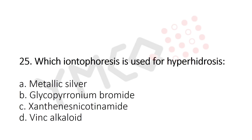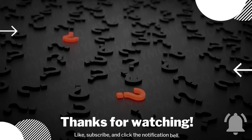Question 25: Which iontophoresis is used for hyperhidrosis? Option A: metallic silver; option B: glycopyrronium bromide; option C: zendinase nicotaminate; option D: vinca alkaloid. The answer is option B: glycopyrronium bromide.